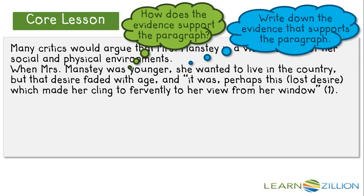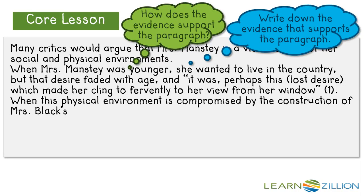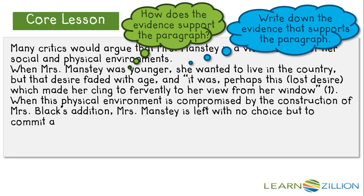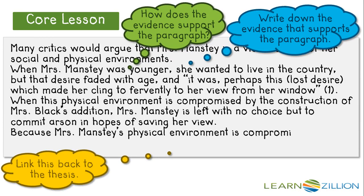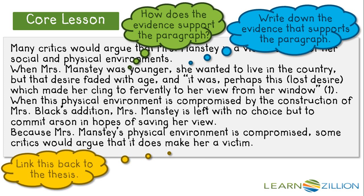Now I need to ask myself how the evidence supports the paragraph. On my outline, I noted that this physical environment is compromised by the construction of the addition. I'll write: "When this physical environment is compromised by the construction of Mrs. Black's addition, Mrs. Manstey is left with no choice but to commit arson in hopes of saving her view." For the last step, I need to link this back to the thesis. Because this is a counterclaim paragraph, it doesn't directly support my thesis, so I'll write that because Mrs. Manstey's physical environment is compromised, some critics would argue that it does make her a victim — leaving room to come back and show how this argument is incorrect.